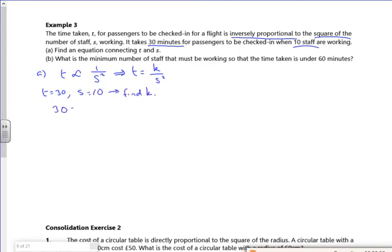So that should help me find K. So 30 is K over 10 squared. Have I got that the right way around? Yeah. So 3,000 is K there. So T is 3,000 over S squared.